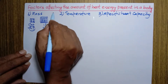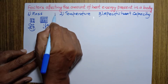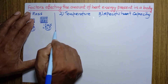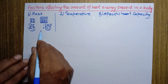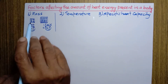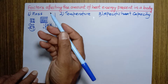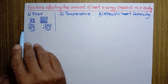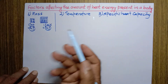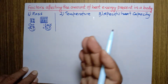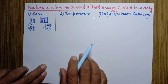Since the sum of the kinetic energy of all the molecules of the body is the heat energy contained in that body, the heat energy in the second one is greater than the first one. Thus we can conclude that heat energy depends upon mass — more the mass, more the heat energy; and less the mass, less the heat energy.